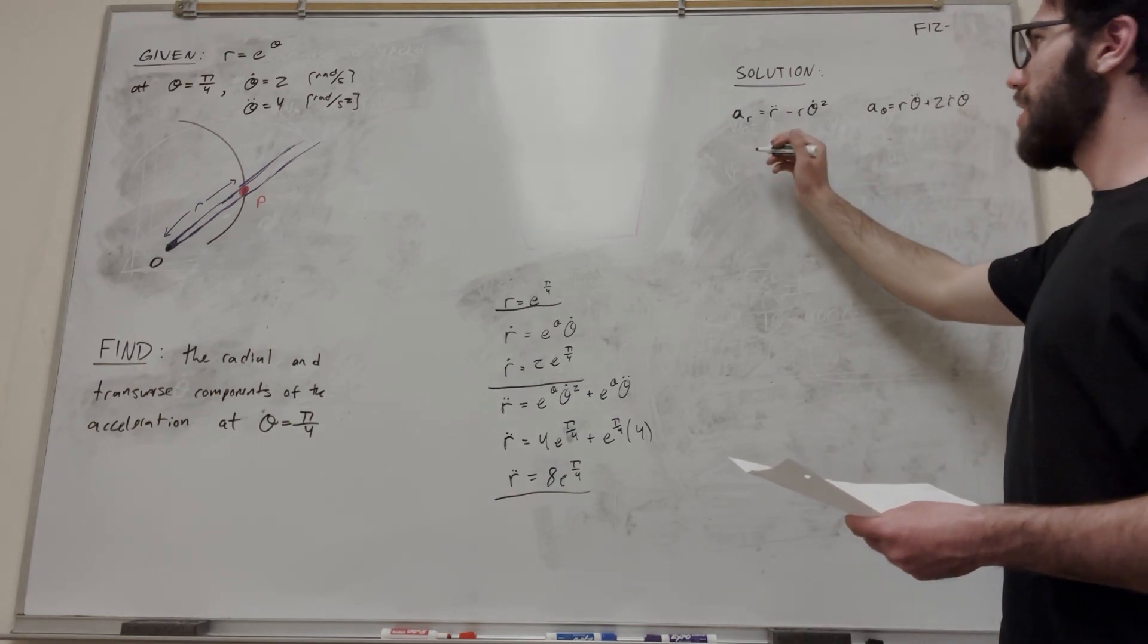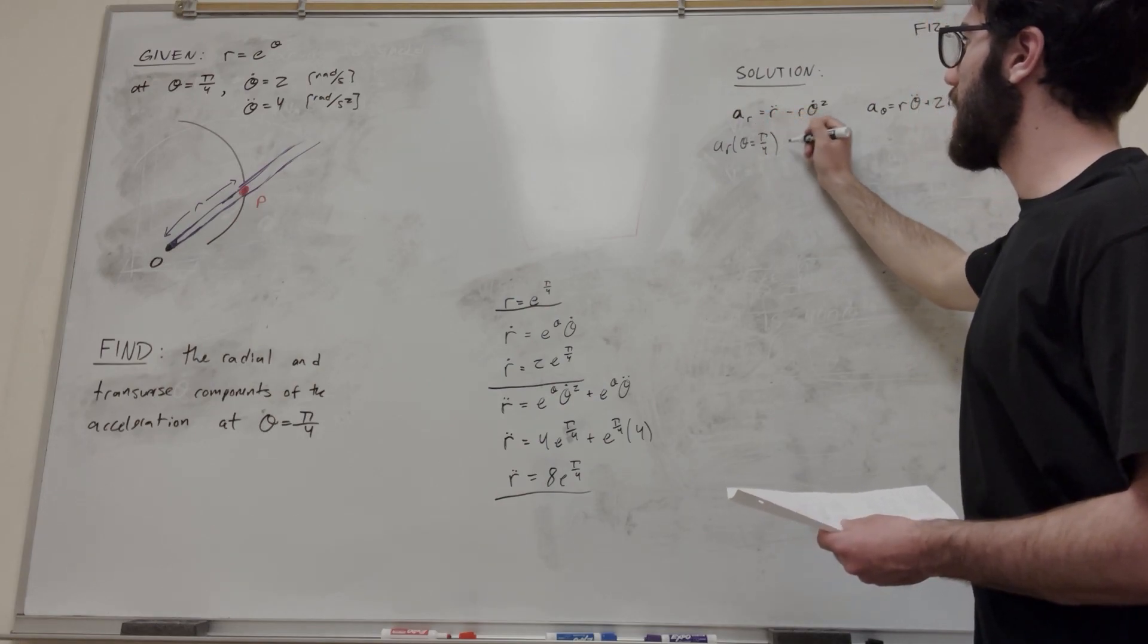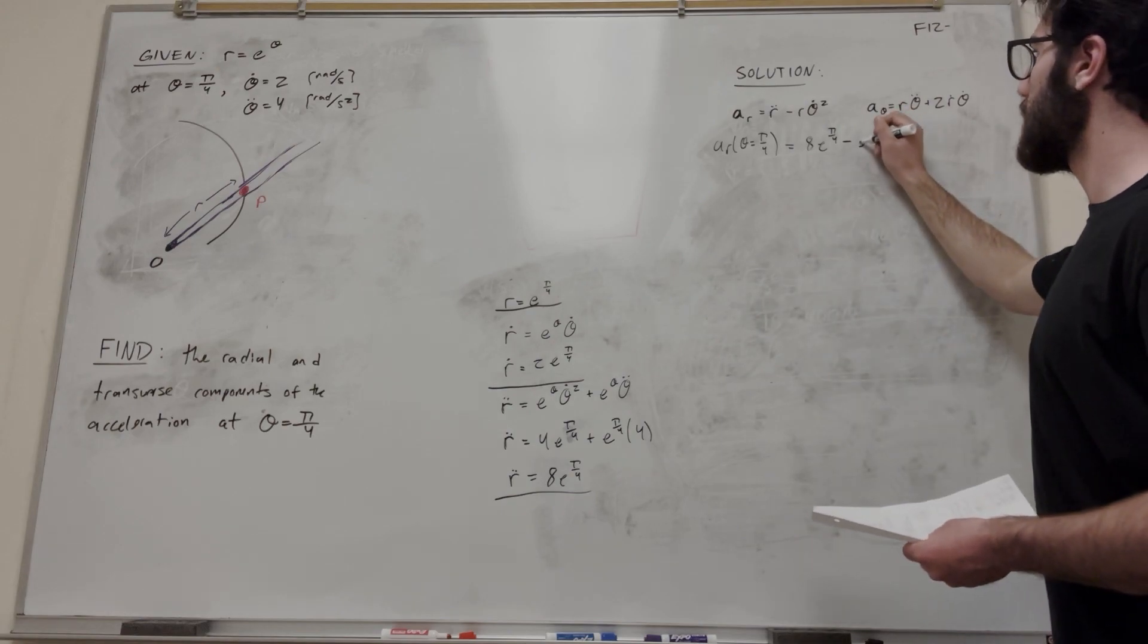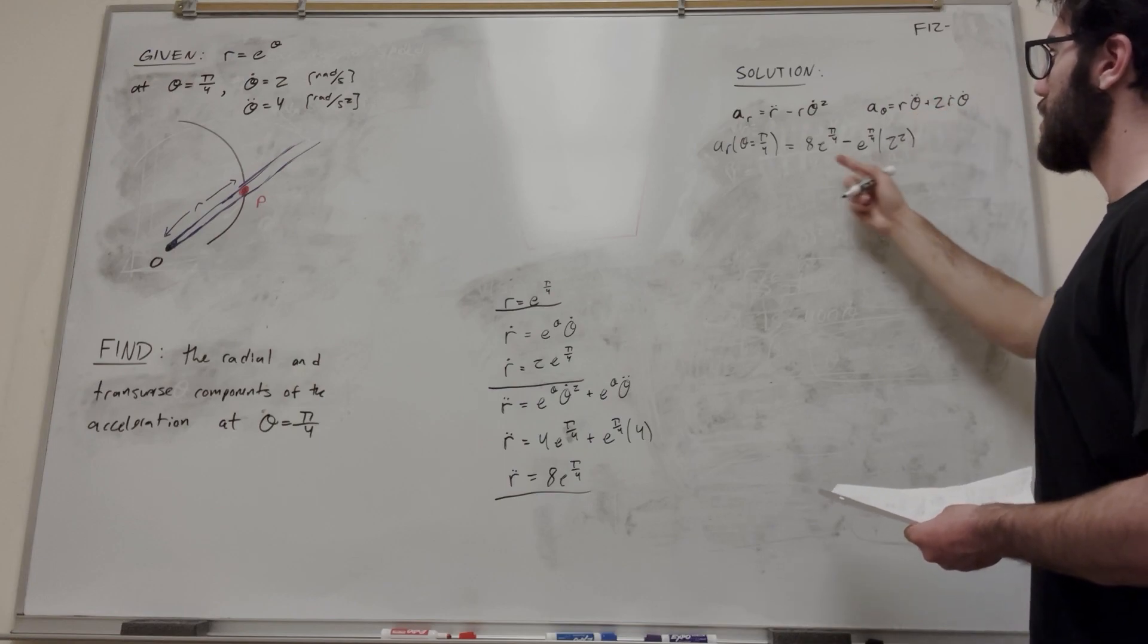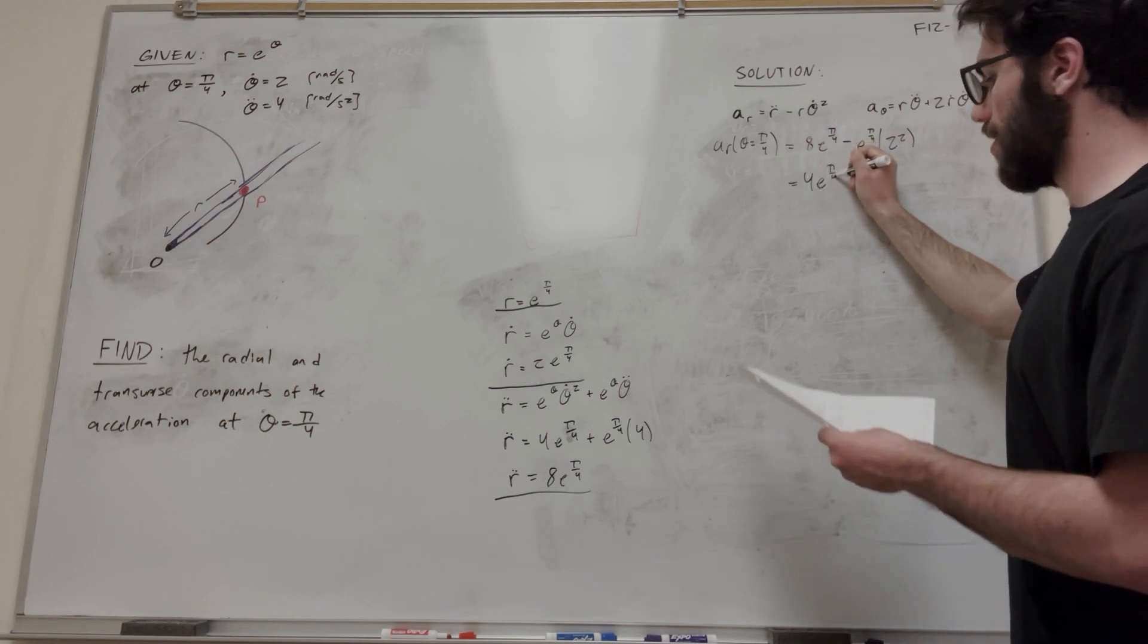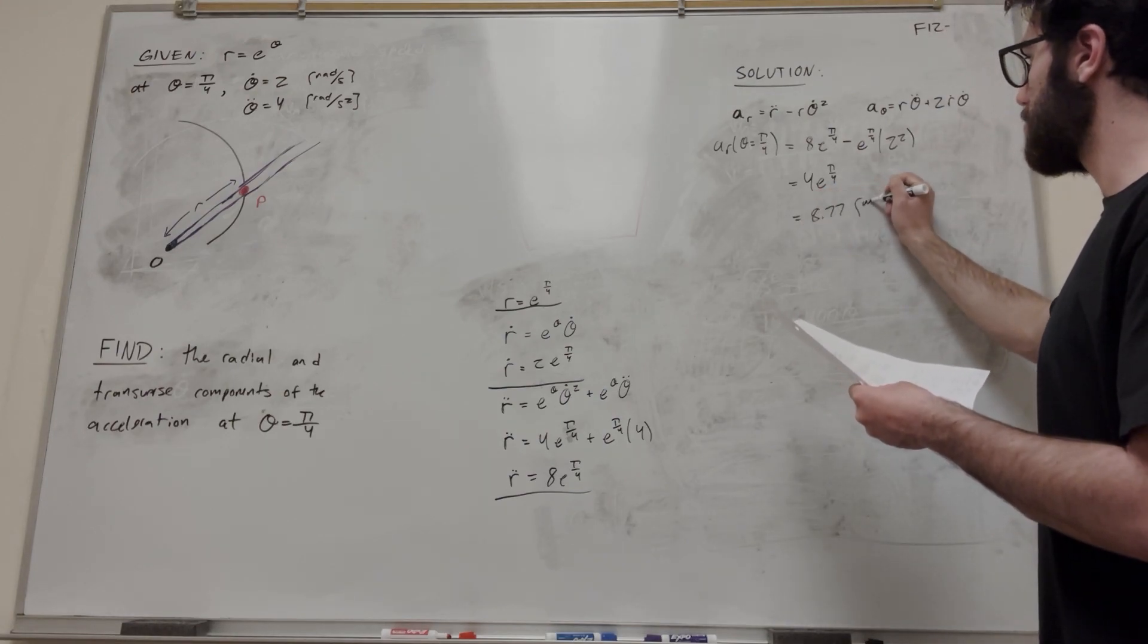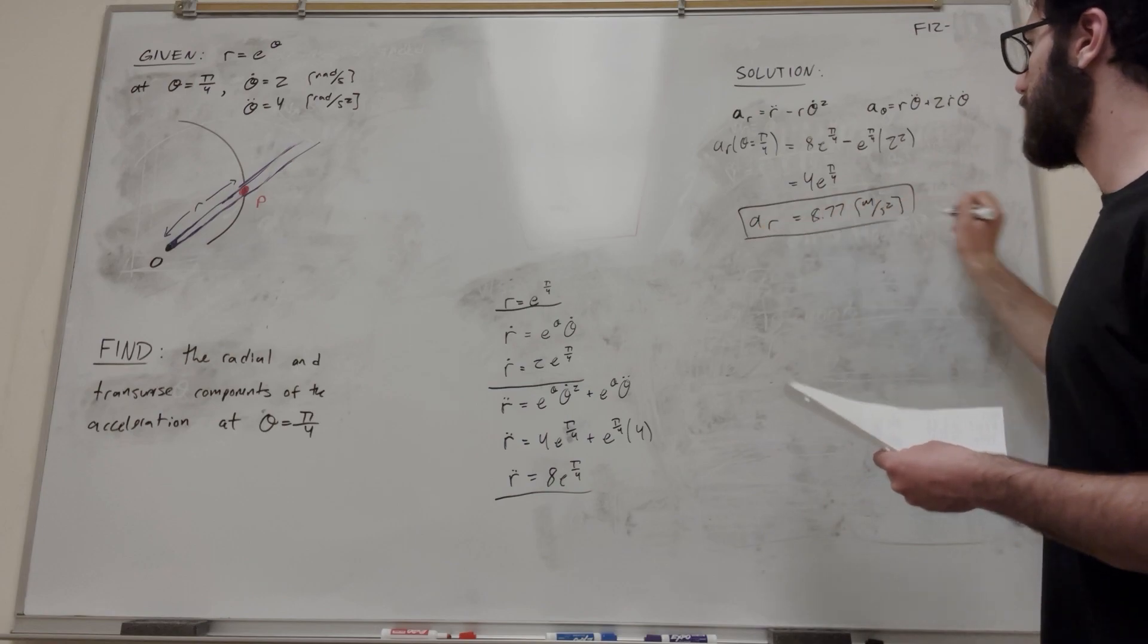So let's start with the transverse component. Ar at theta equals pi over 4. So r double dot is 8 e to the pi over 4 minus radius e to the pi over 4 theta single dot squared. So it's going to be 2 squared, so it's going to be 8 minus 4. This is just going to be equal to 4 e to the pi over 4. So if you calculate this, you get 8.77 meters per second squared, and that's acceleration in the transverse component. So that's the first part of this problem.